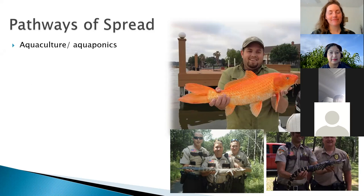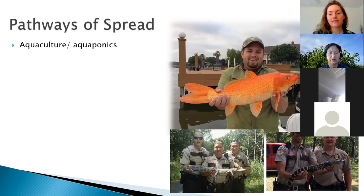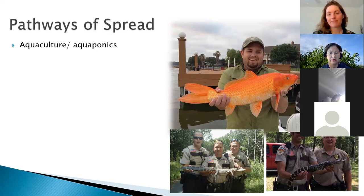One of the first ways that stuff gets here is through aquaculture and aquaponics — using farming of fish and animals. That big goldfish you see the guy holding was actually taken from the Mississippi River. It was thought to escape from somebody's water garden where they had koi and goldfish, and it escaped to a back part of the river and was just hanging out there for years until eventually someone caught it. You can see how big it got. They're not meant to sustain things like that in those river systems, so the more we add in there, the more of a problem it becomes.